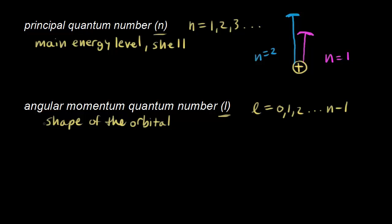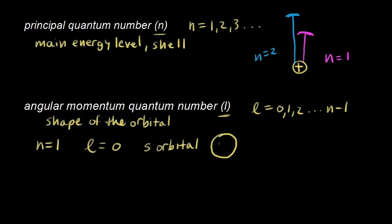For the first main energy level, n equals one, there's only one possible value for L: n minus one equals zero. When L equals zero, we call this an s orbital, and the shape of an s orbital is a sphere. So the electron is most likely to be found somewhere in that spherical three-dimensional volume.